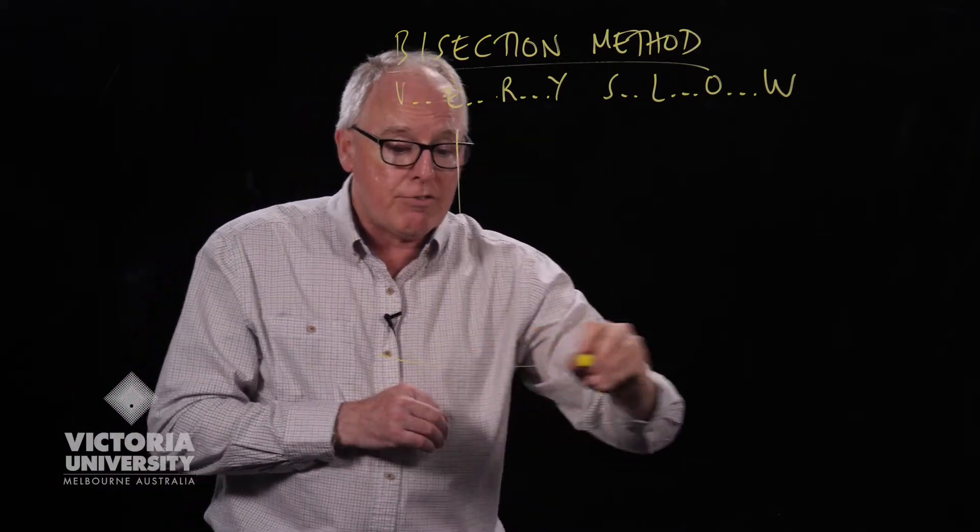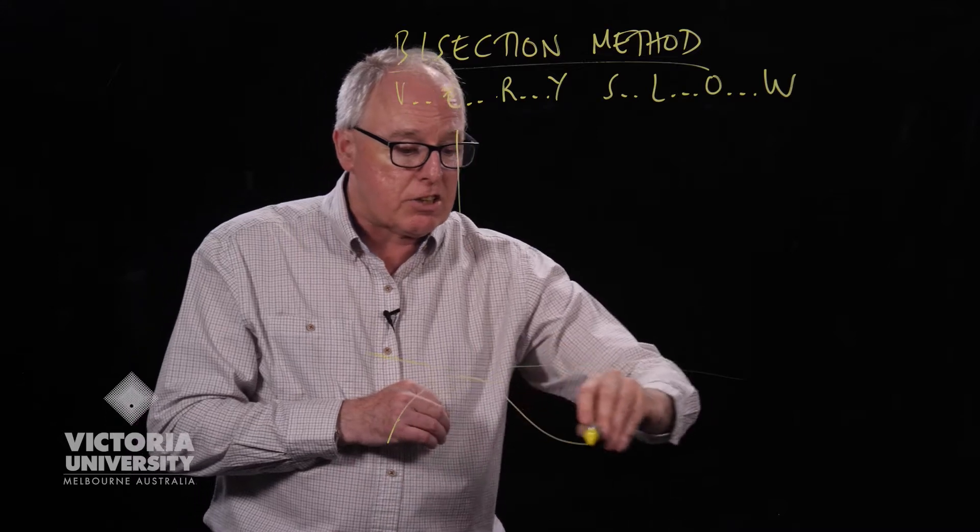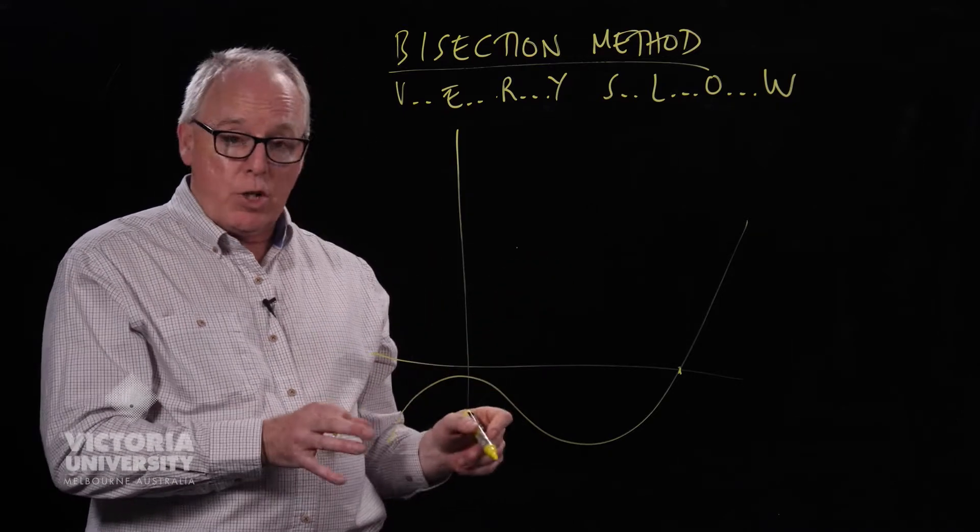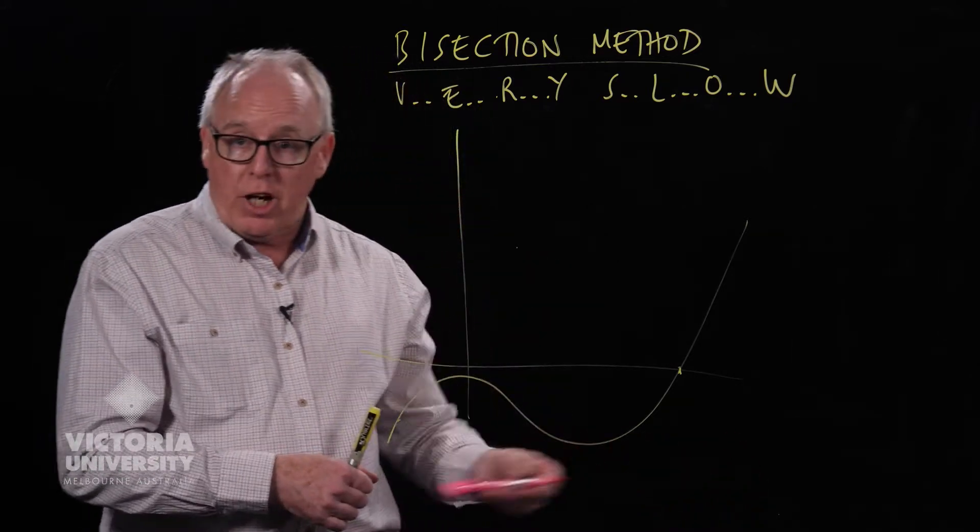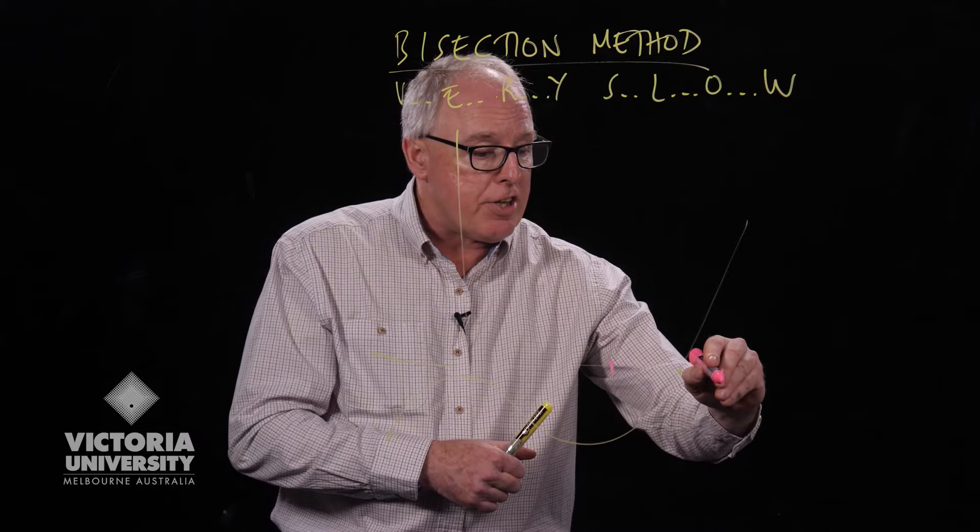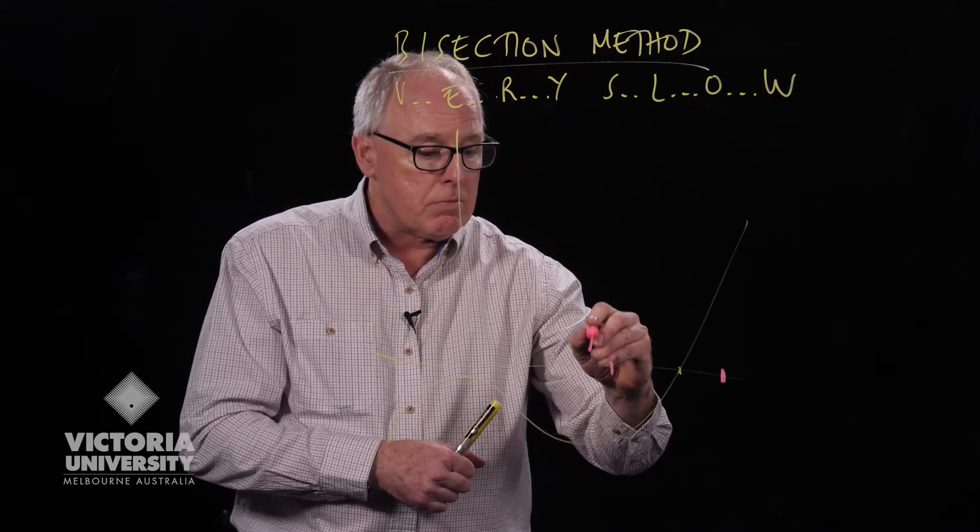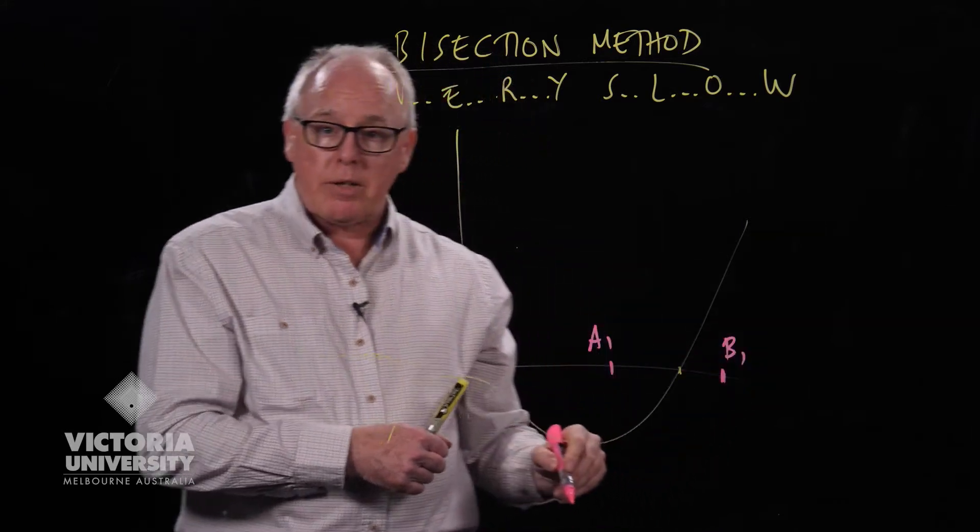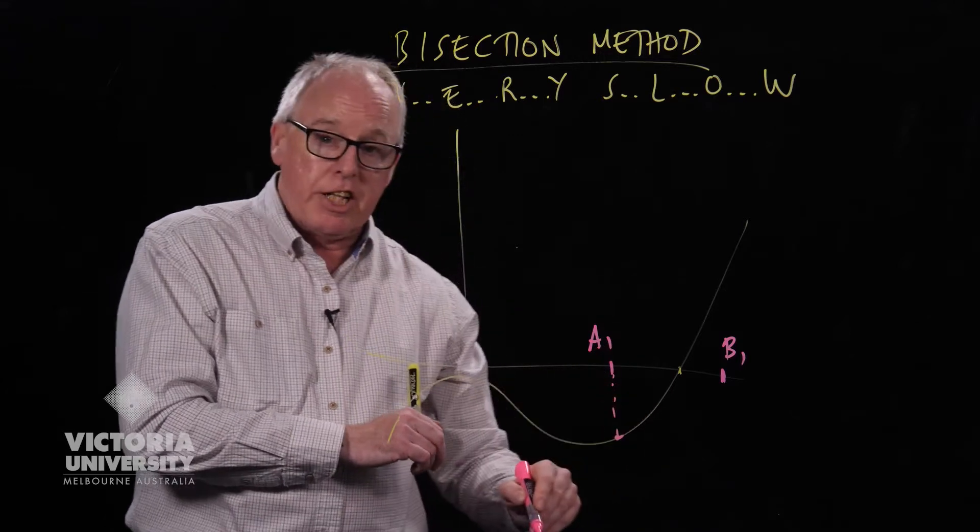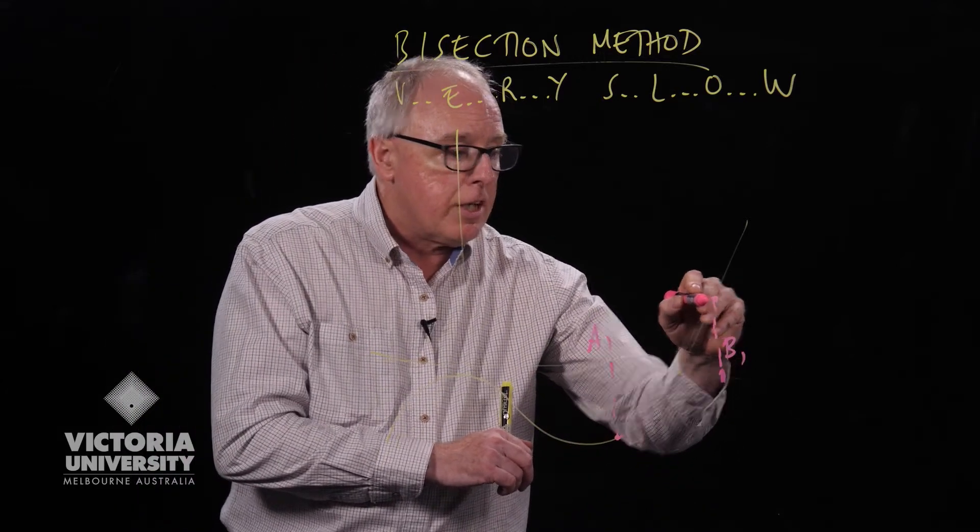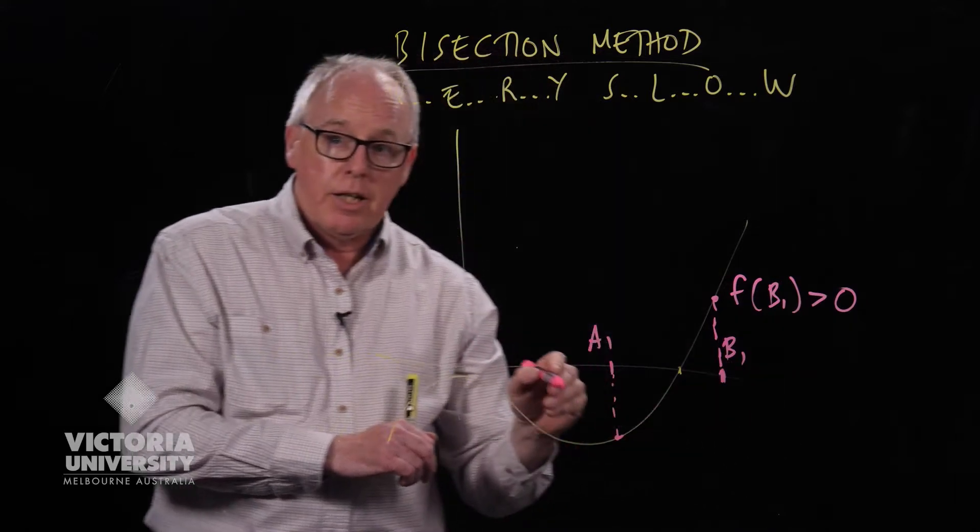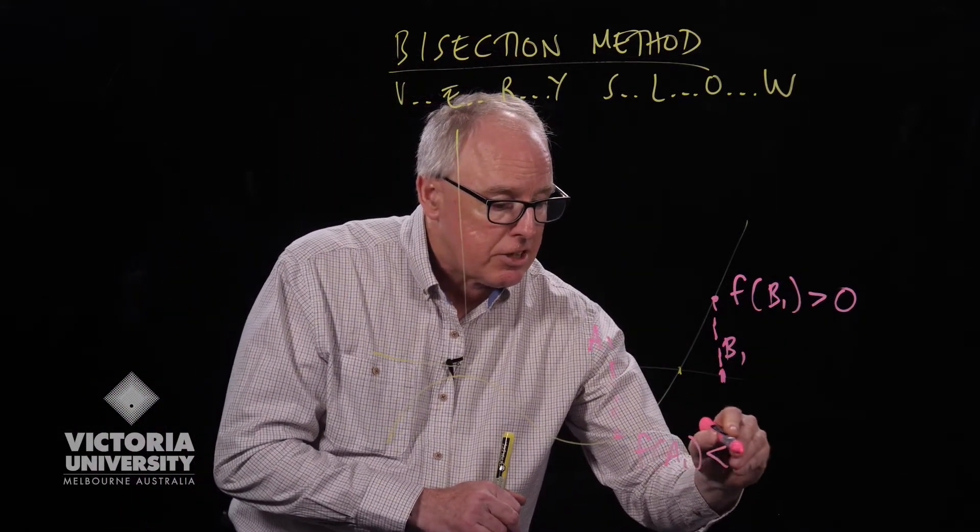So this is how it works. We have a function and it crosses the x-axis somewhere there. So this is the root we're trying to find, the solution of the equation. We now choose, on either side of it, some value that has a negative value and a value that is positive. So we'll call that one a1 and that value b1. The importance of choosing values at either side is that one of them is negative and the other one has a positive value. So in this case, we have f of b1 is greater than zero and f of a1 is less than zero.